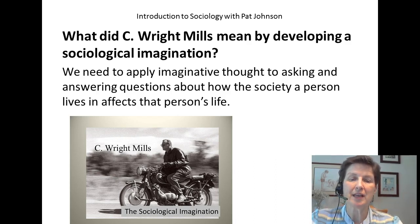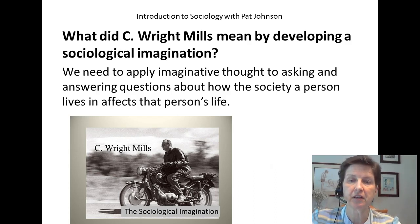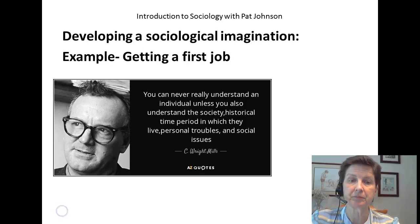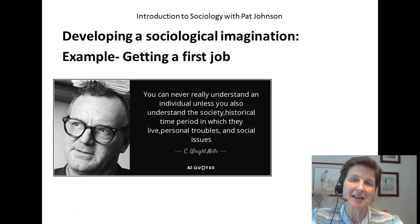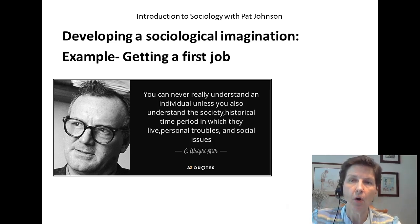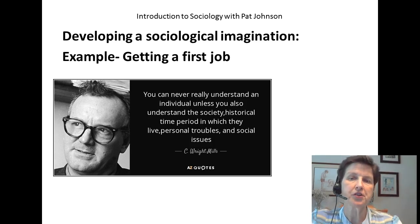C. Wright Mills said we need to apply imaginative thought to asking and answering questions about how the society a person lives in affects that person's life. For example, let's suppose a person is having problems getting a job. We might say on the surface, well, maybe the person just hasn't applied to enough places, or maybe the person's too picky and doesn't want to work at a fast food place. But if we use our sociological imagination, we go a lot deeper than that.